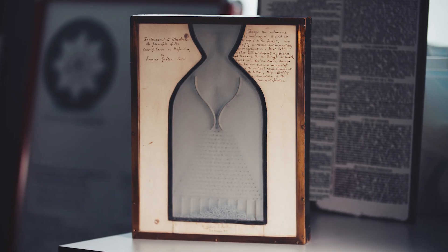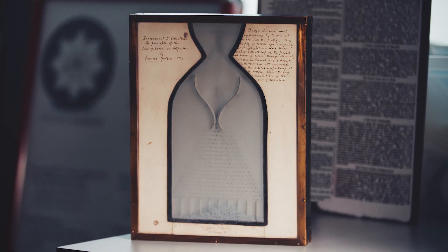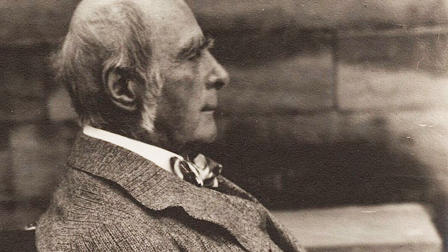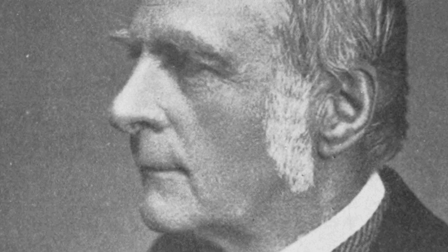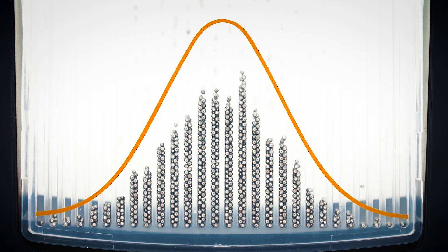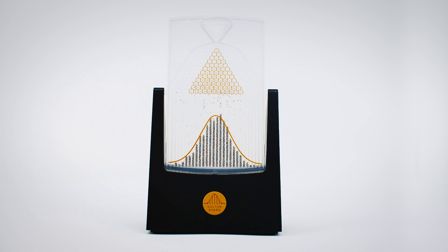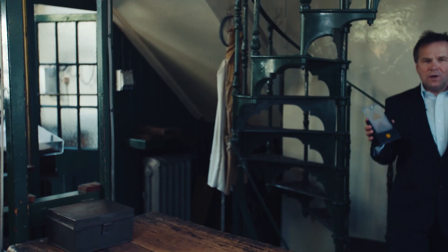The Galton Board, invented in 1876 by the Victorian genius Sir Francis Galton, presents an elegant demonstration of how a normal distribution arises from the combination of a large number of random events. It provided Galton with key insights into the distribution of human characteristics during his studies on heredity.